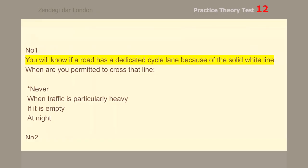Number 1. You will know if a road has a dedicated cycle lane because of the solid white line. When are you permitted to cross that line? Never.